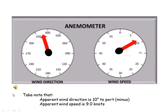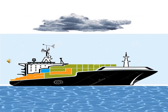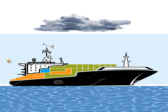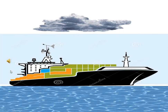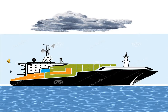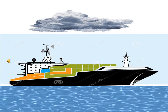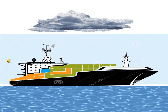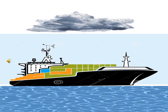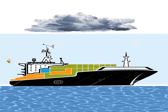An anemometer reading is provided. Apparent wind direction is 10 degrees to port — that's minus since to port — and apparent wind speed is 9.0 knots. All the equipment and instruments necessary to solve or calculate the true wind speed and direction using the ship's anemometer are all available on board a vessel.